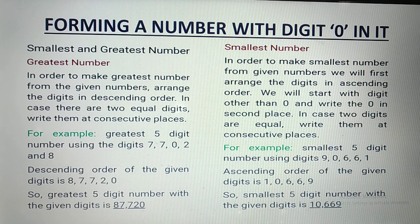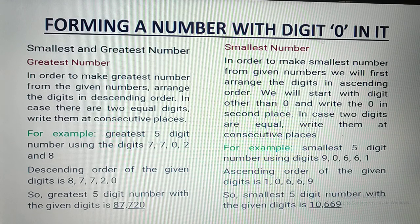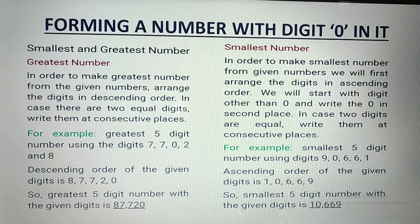But if you are making the smallest number, you will not begin with 0 — 0 hum sabse pehle nahi lagayenge. Otherwise, that 0 has no value. If 0 comes before any number, it has no value. So we will not start a number with 0; instead we place 0 after the smallest non-zero digit. So the arrangement is 2, 0, 7, 7, 8 — this becomes the smallest number.